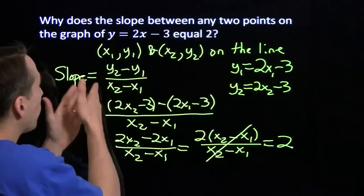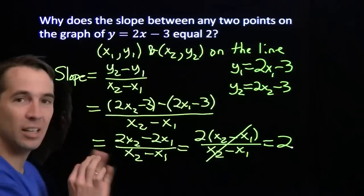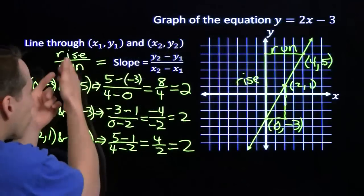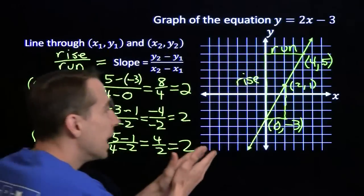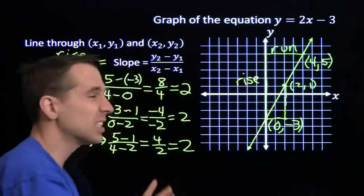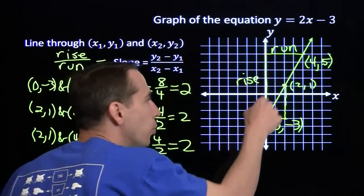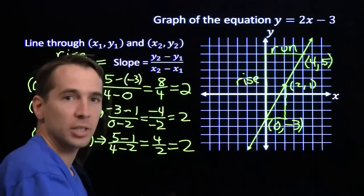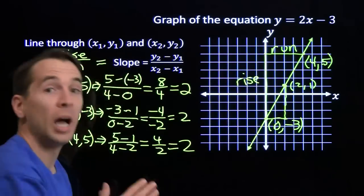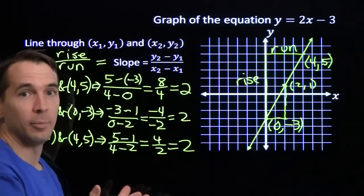So no matter what two points we start with that are on this line, when we work out the slope we always get 2. This is why we can use the idea of slope — rise over run — as the direction of the line. Any two points I pick on this line, when I find the slope between them, I'll get the same thing.